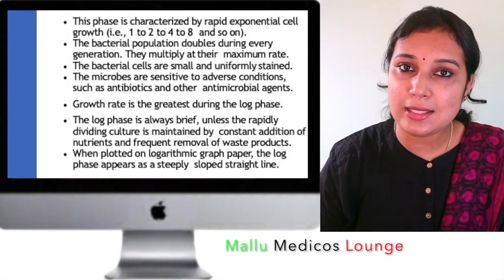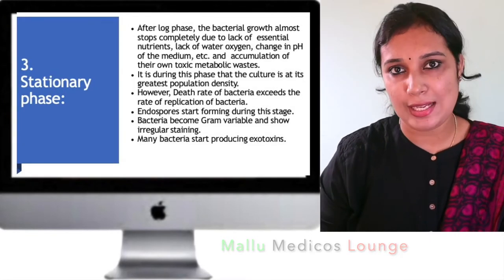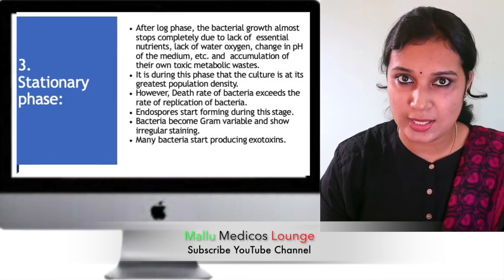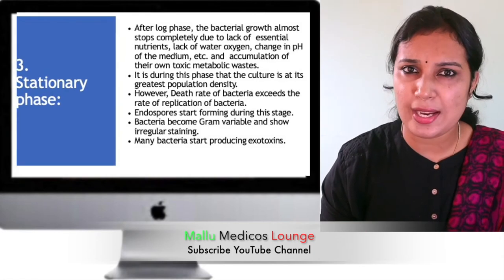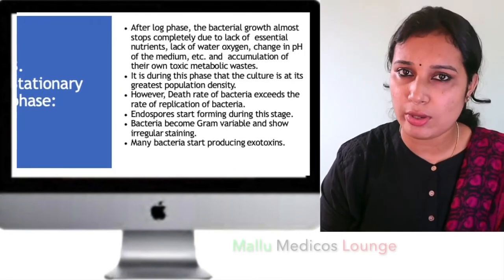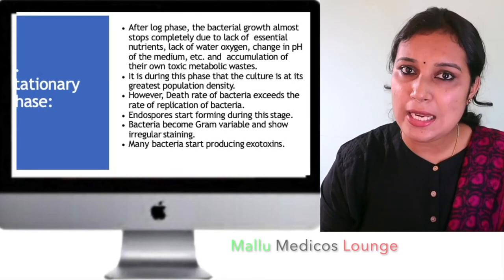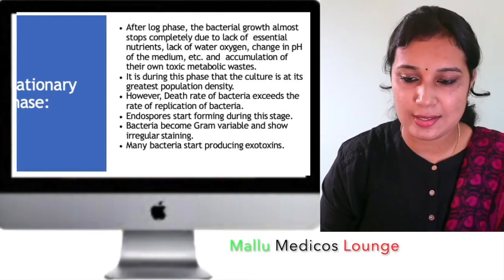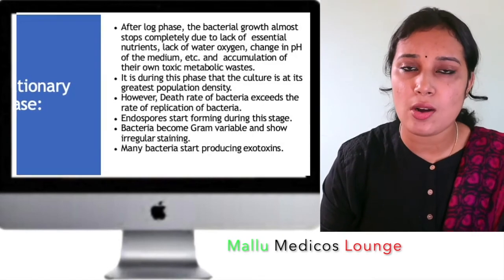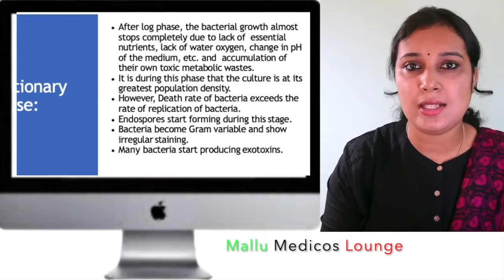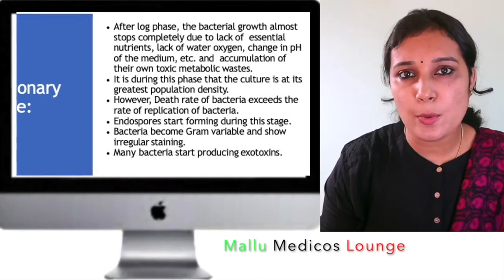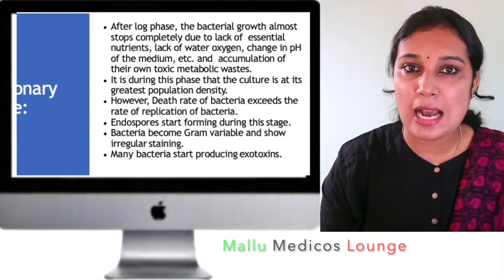After the log phase, the third phase is the stationary phase. During the log phase, bacteria multiply until the maximum cell count is reached. Then, nutrients in the environment gradually become depleted. There are also accumulations of toxic waste products. Because of the lack of nutrients and suitable pH and temperature, the bacteria will slow down and stop multiplying. In the stationary phase, bacteria may start endospore formation.